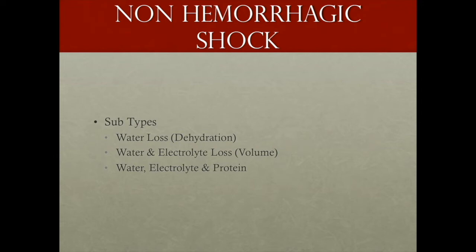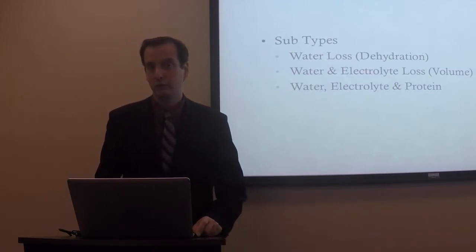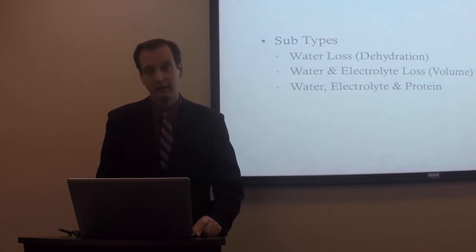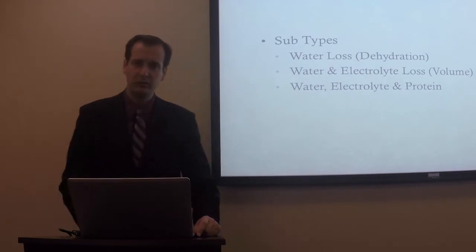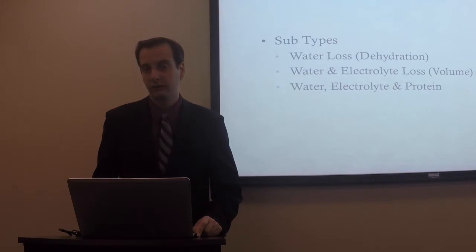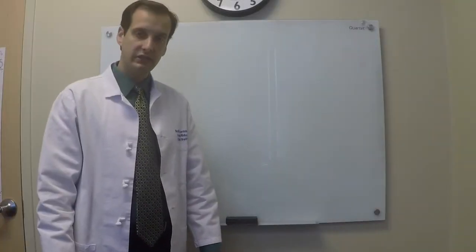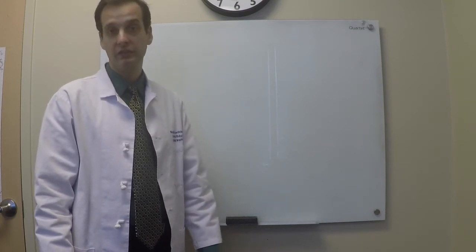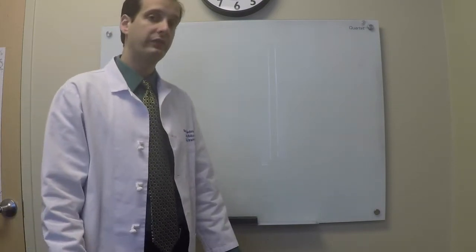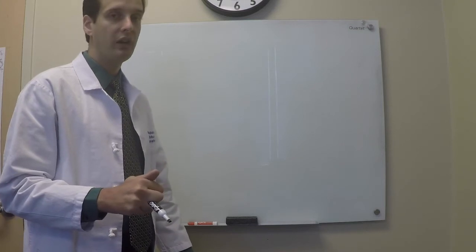The second type of hypovolemic shock is non-hemorrhagic shock — you are losing fluid but not hemoglobin. It can be broken into subtypes: pure water loss (dehydration), water and electrolyte loss such as from vomiting, diarrhea, or intestinal fistulas (the most common), and water, electrolyte, and protein loss such as from burns or sequestering ascites from liver failure. Whatever you lose, that is what you should replace: water loss gets water, water and electrolyte loss gets crystalloid, and water, electrolyte, and protein loss gets colloid. The first-line treatment for all types of shock is fluid, and in hypovolemic shock that is also the primary deficit being addressed, so we need to discuss fluid physiology and the rules governing it.